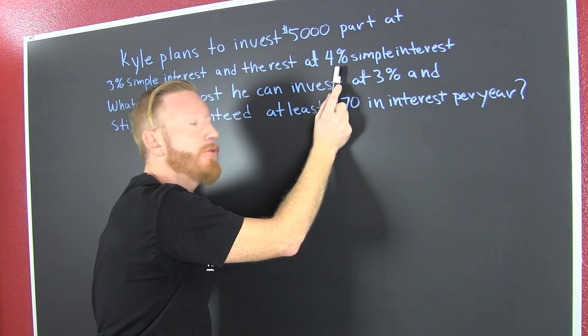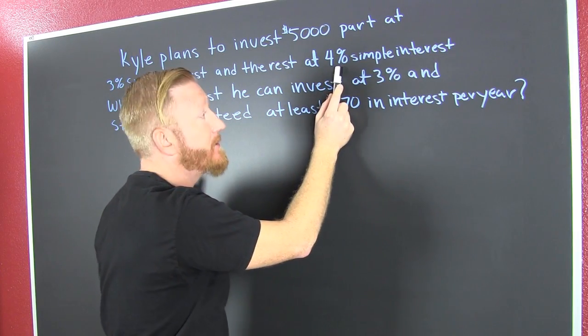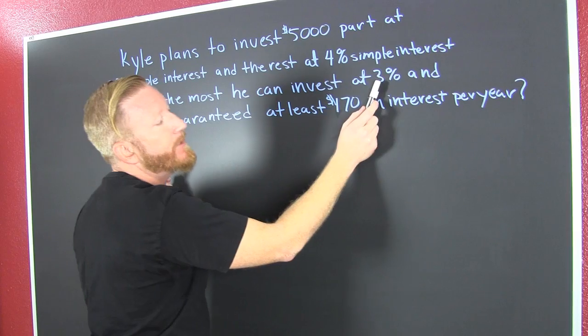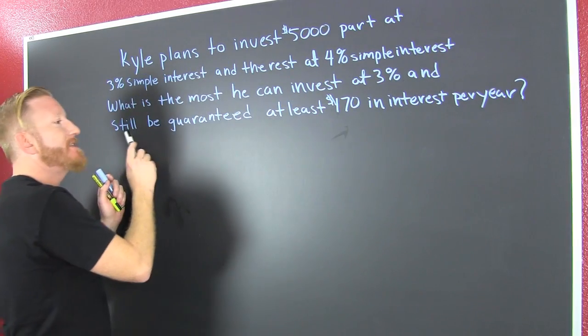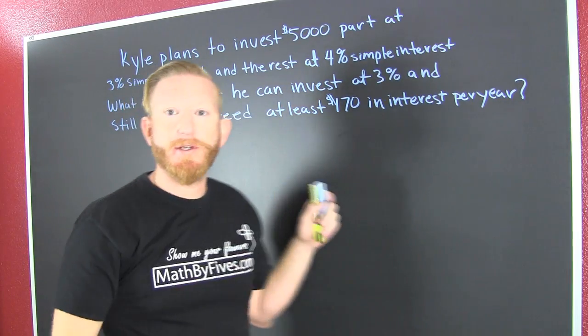And you're probably interested in wondering why Kyle wants to diversify investments, but he just wants to. What is the most he can invest at 3% and still be guaranteed at least $170 in interest per year?